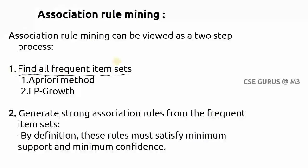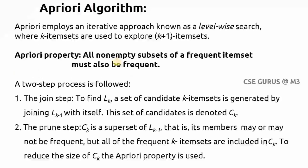Now we'll go for the Apriori algorithm. Instead of going to the theory part first, I'll explain this Apriori algorithm with an example, and after that we'll understand all those things. Remember the Apriori property: all non-empty subsets of a frequent item set must also be frequent. We'll also have two steps — join step and prune step.